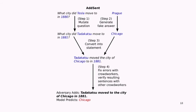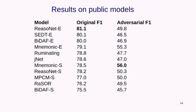We did this more systematically: we took all test set questions, mutated them by switching named entities and replacing words with antonyms, generated fake answers, converted them to declarative statements, and had crowd workers fix them up. The adversary would add a sentence to the end of the passage with high word overlap with the question, but not actually answering it. We ran all the models on this adversarial evaluation and the numbers start looking much worse — going from the 80s to the mid-70s to the 50s and 40s.